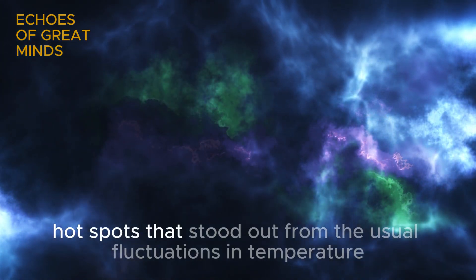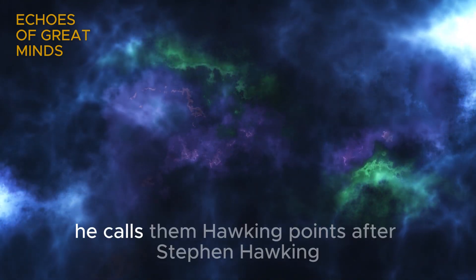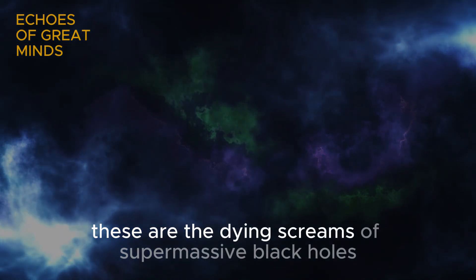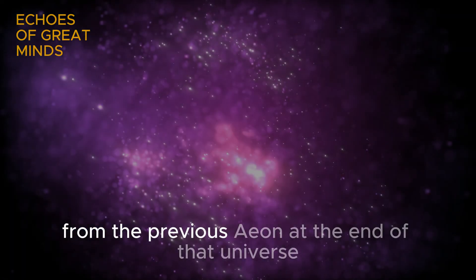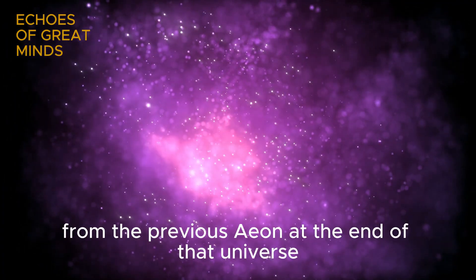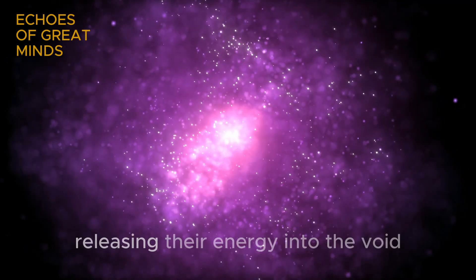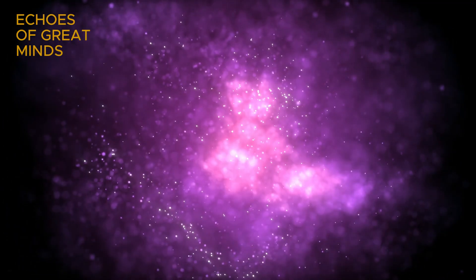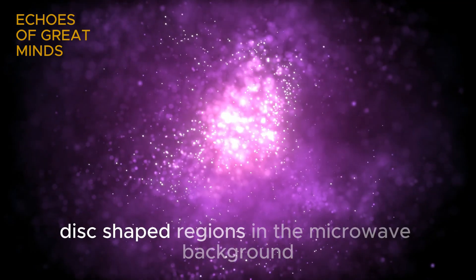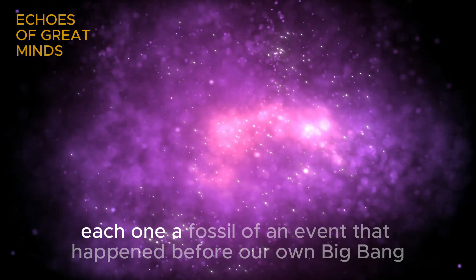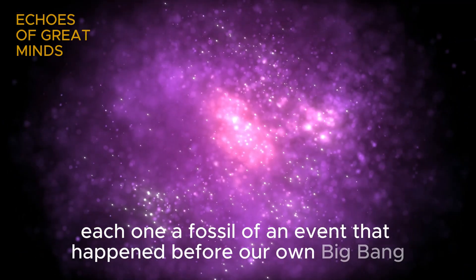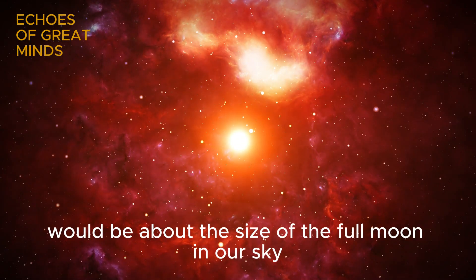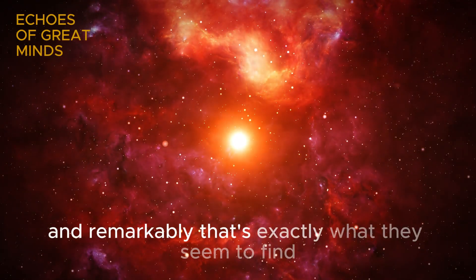He calls them Hawking points, after Stephen Hawking. In his interpretation, these are the dying screams of supermassive black holes from the previous aeon. At the end of that universe, the last black holes would slowly evaporate, releasing their energy into the void. That energy, carried across the transition into our universe, would eventually appear as bright disc-shaped regions in the microwave background. Each one, a fossil of an event that happened before our own Big Bang. The discs, according to his analysis, would be about the size of the full moon in our sky. And remarkably, that's exactly what they seem to find.